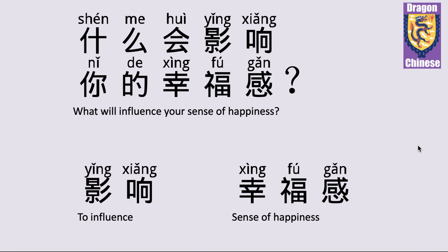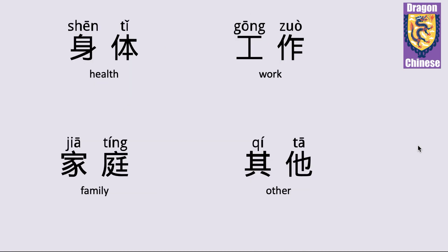身体 — health. 工作 — work. 家庭 — family. 其他 — other.